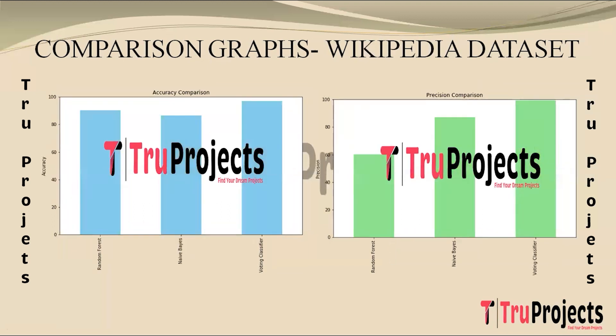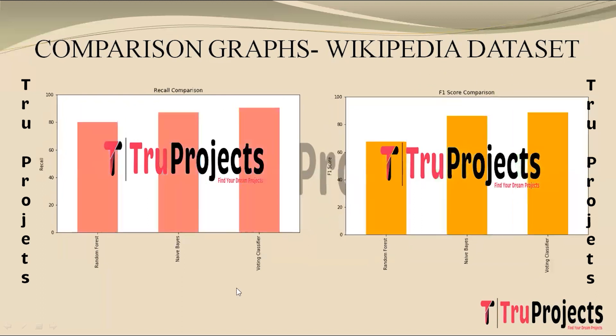Similarly, these are the comparison graphs of the algorithms built using the Wikipedia dataset. The algorithm which is best performing across all performance metrics will be used for classification.